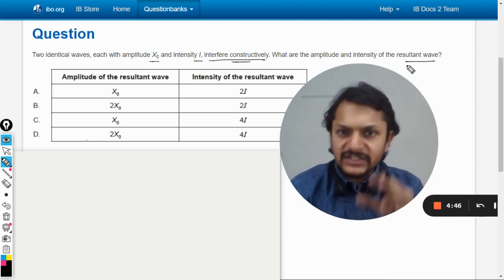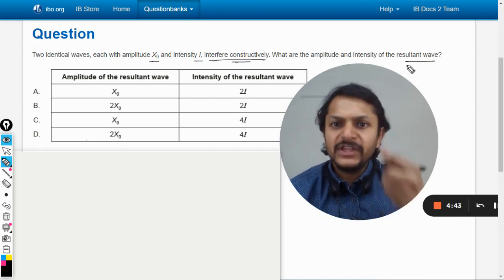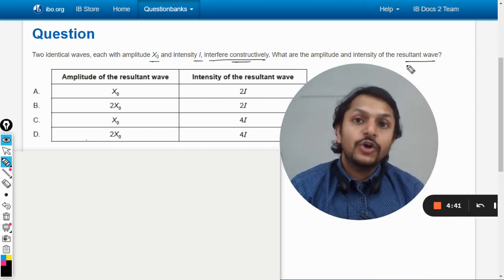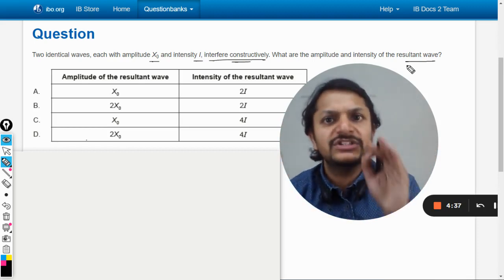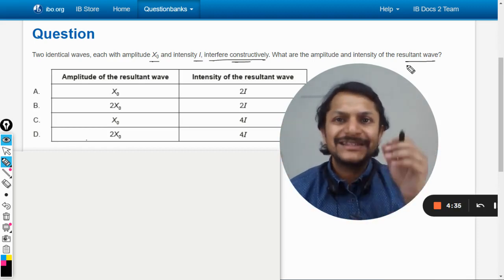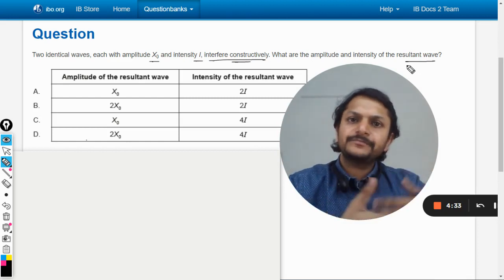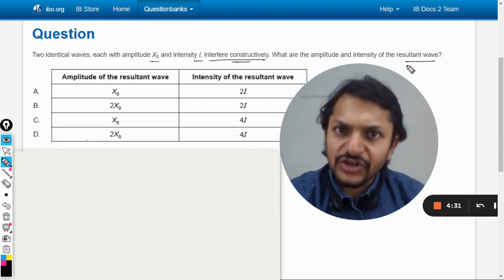So, there is this resultant wave and we want to find the amplitude and the intensity. As we know that when two waves overlap each other, the amplitudes just undergo the simple algebraic addition or subtraction.